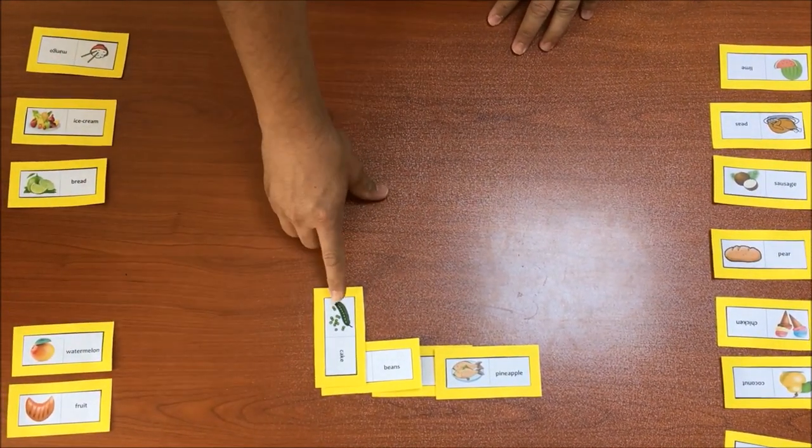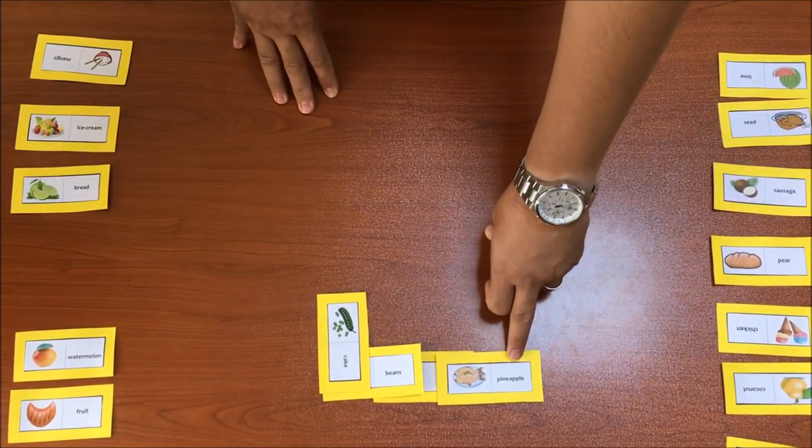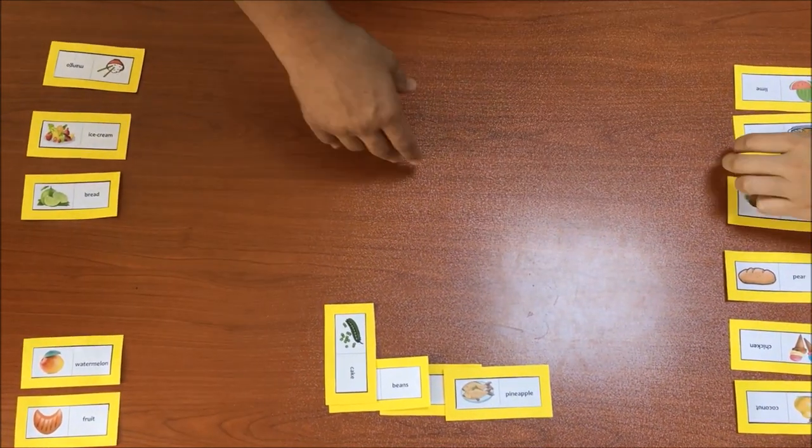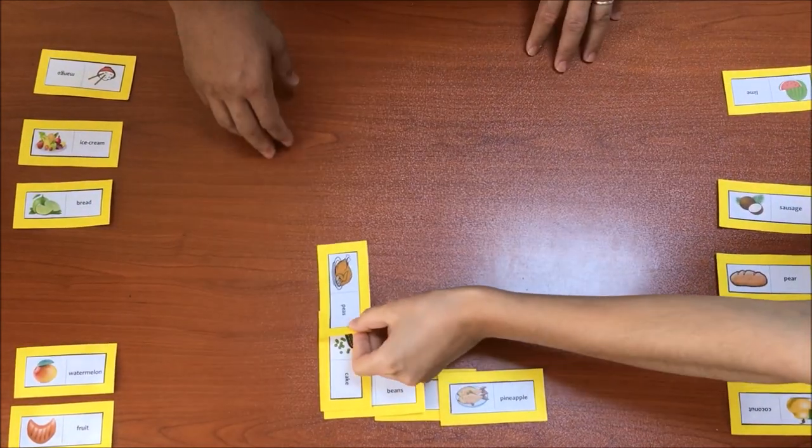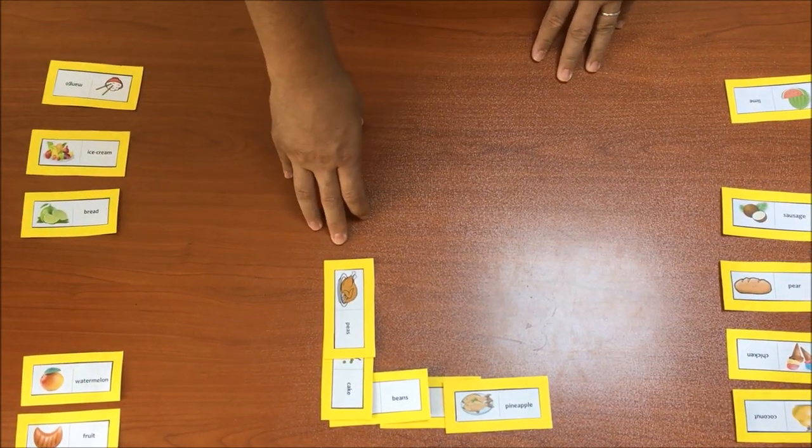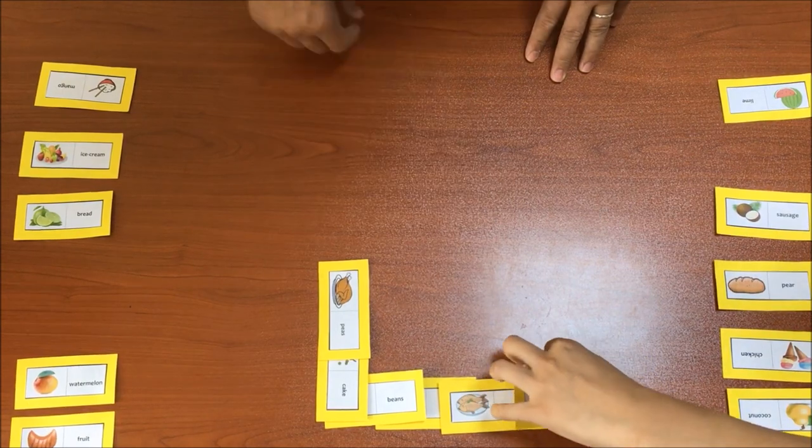Do you have peas? No. Pineapple? The picture of pineapple? Okay. Now you go on. I have peas. Peas. Do you have chicken? Yes. Pineapple. Great.